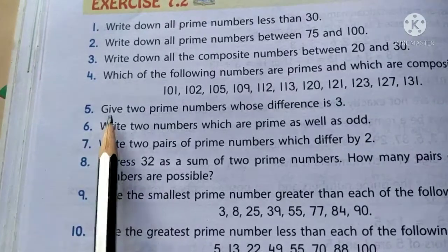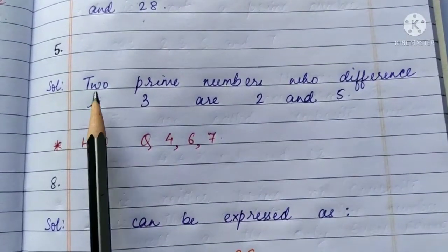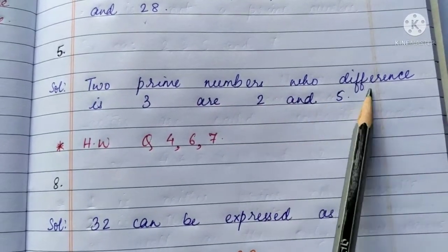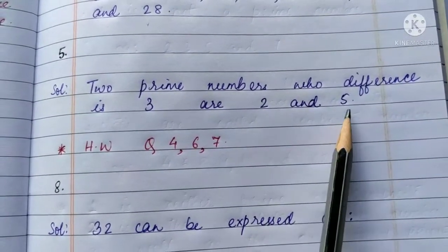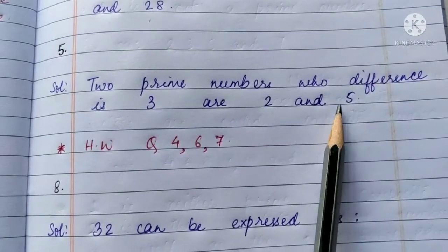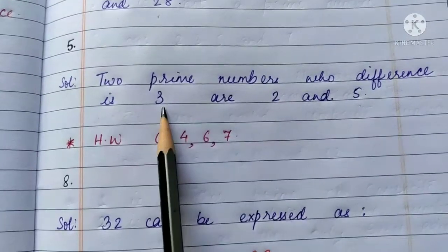Question 5. Give two prime numbers whose difference is 3. Two prime numbers whose difference is 3 are 2 and 5. Both of these are prime numbers and when we subtract 5 and 2, that is 5 minus 2 equals to 3.